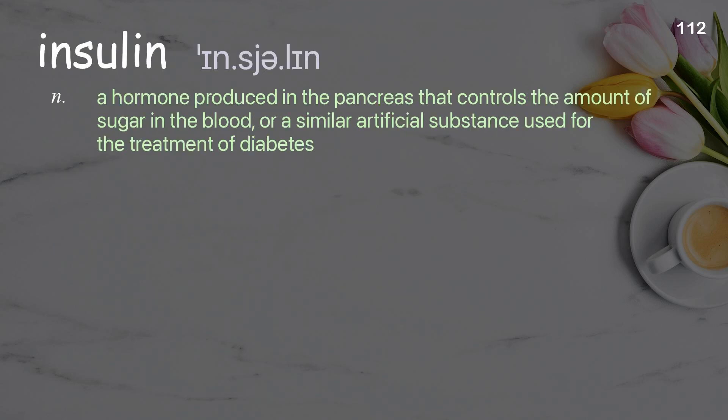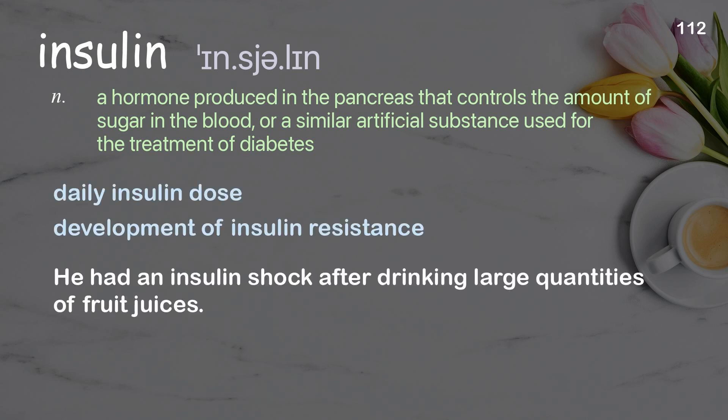Insulin: a hormone produced in the pancreas that controls the amount of sugar in the blood, or a similar artificial substance used for the treatment of diabetes. Examples: daily insulin dose, development of insulin resistance. He had an insulin shock after drinking large quantities of fruit juices.